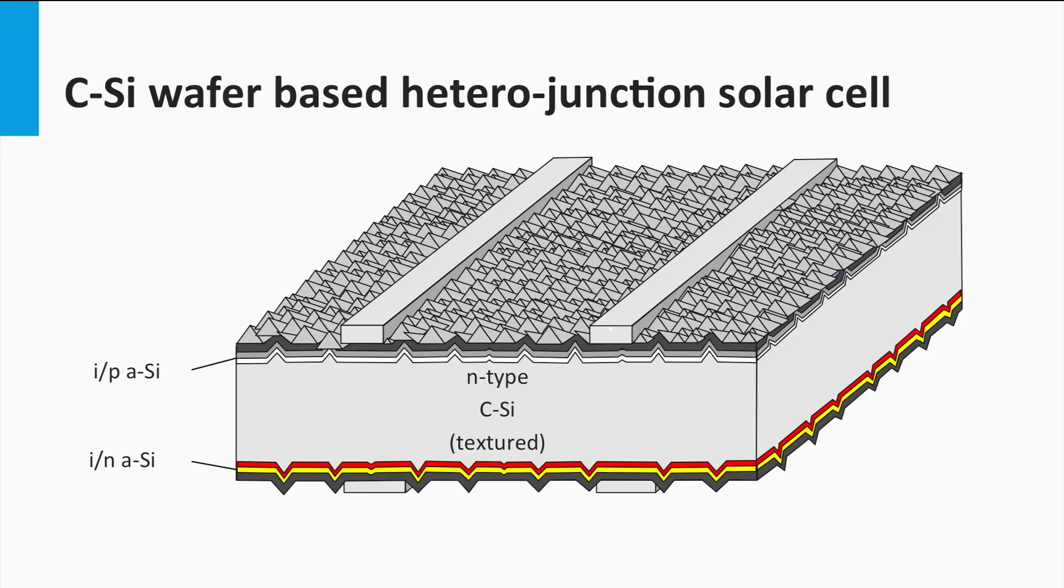At the rear surface a similar junction is made. First, a thin layer of intrinsic amorphous silicon is deposited on the wafer surface, indicated by the red. On top of the intrinsic layer an N-doped amorphous silicon is deposited, indicated by the yellow color.